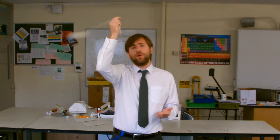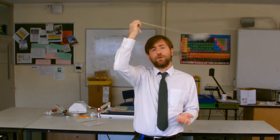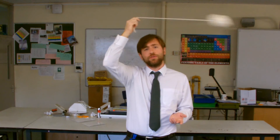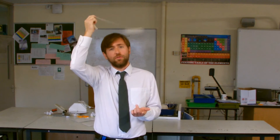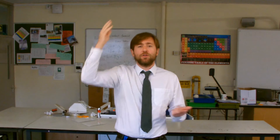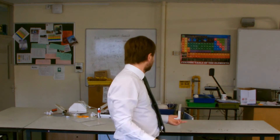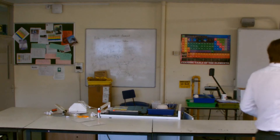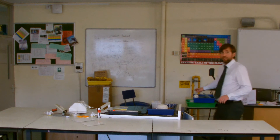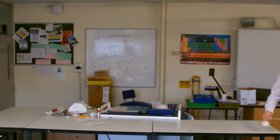I think I know where this misconception comes from, because actually if an object is moving around a circle and at any point you take away that centripetal force — that force towards the centre of the circle — then the object continues to move in the direction it was moving before. We say it flies off at a tangent.